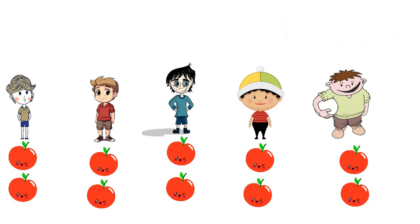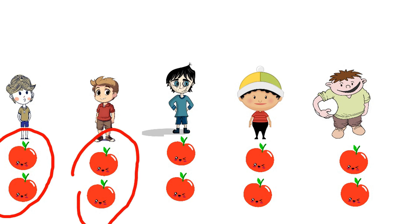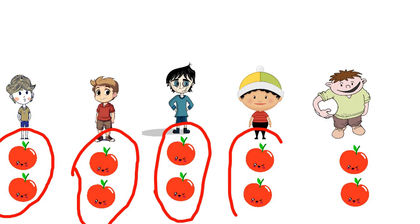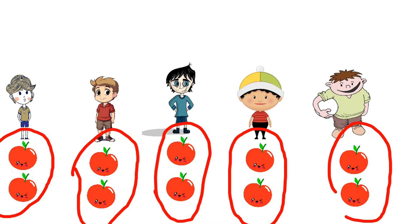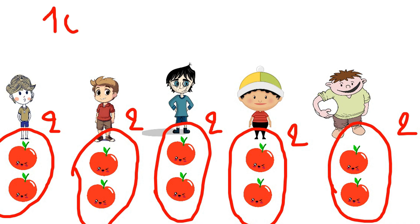Amazing! Each child got two apples. So, ten apples divided by five children equals two apples each. Great job, everyone!